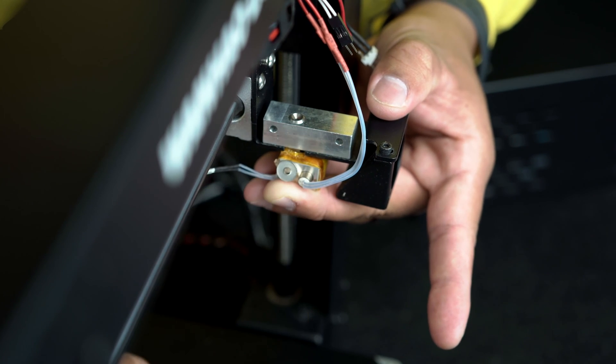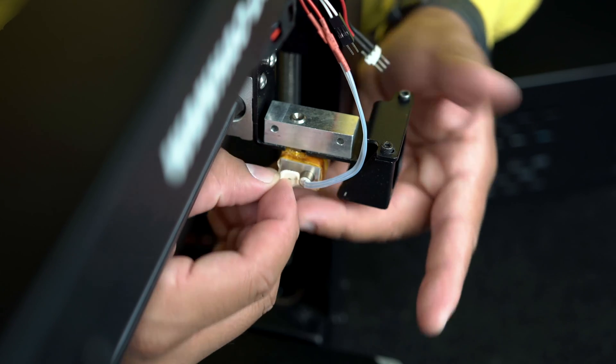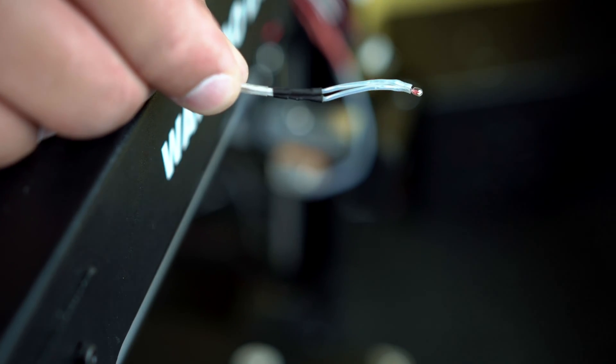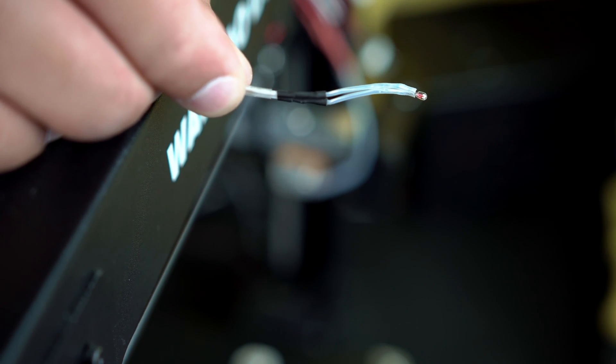Carefully remove these components and you'll be able to free your thermistor. Be very careful when handling the thermistor as the glass bead is very fragile and easy to break.